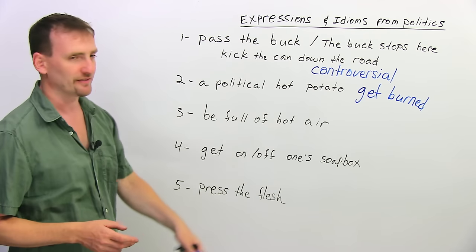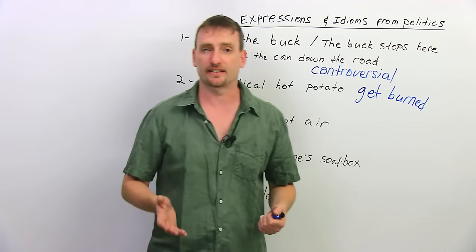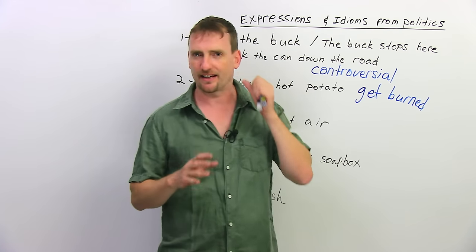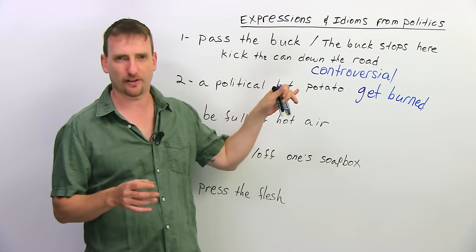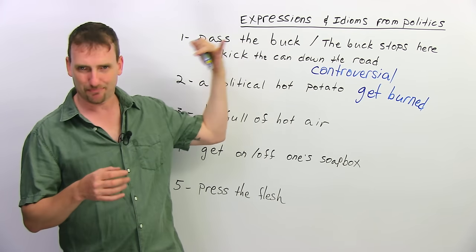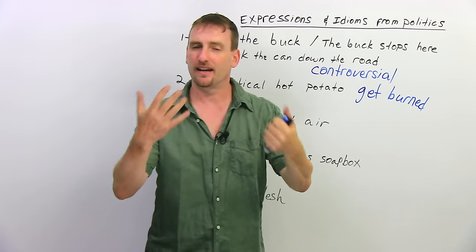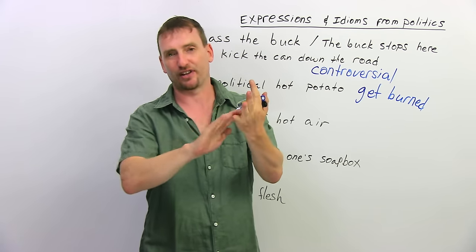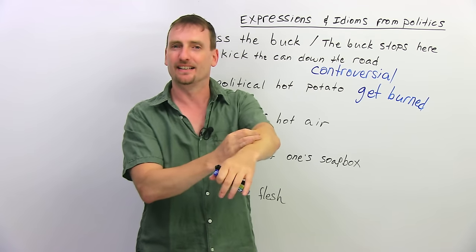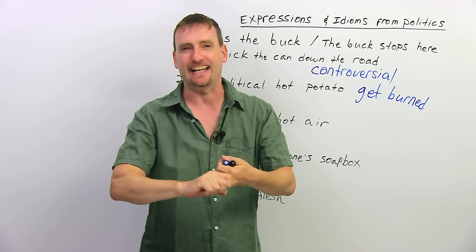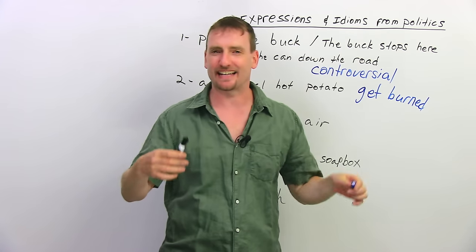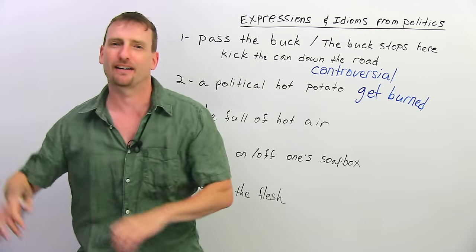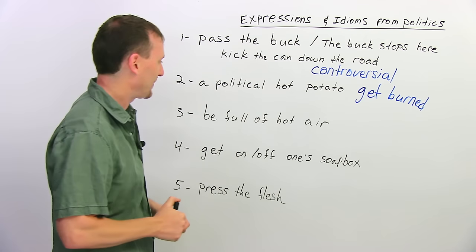And then, press the flesh. So again, what do politicians do? The election is coming up. So now, they can't hide in their office and pretend nothing's going on, and they can't avoid the hot potato. They can't pass the buck. They need to go out and press the flesh. Press the flesh. Well, I can't do it here, but press. This is flesh. Skin. Meat. Press the flesh. Shake hands. So they go around. They shake everybody's hands. They kiss all the babies. They take photo ops. They get elected. They go back to their offices and hide there.